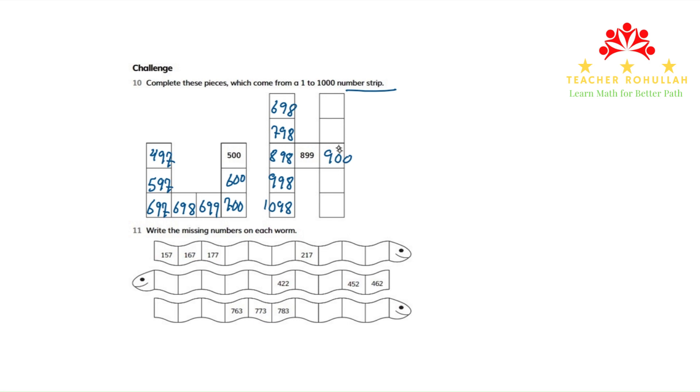So above 900, we have 800. Above 800, we have 700. Below 900, we have 1000. And below 1000, we have 1100.